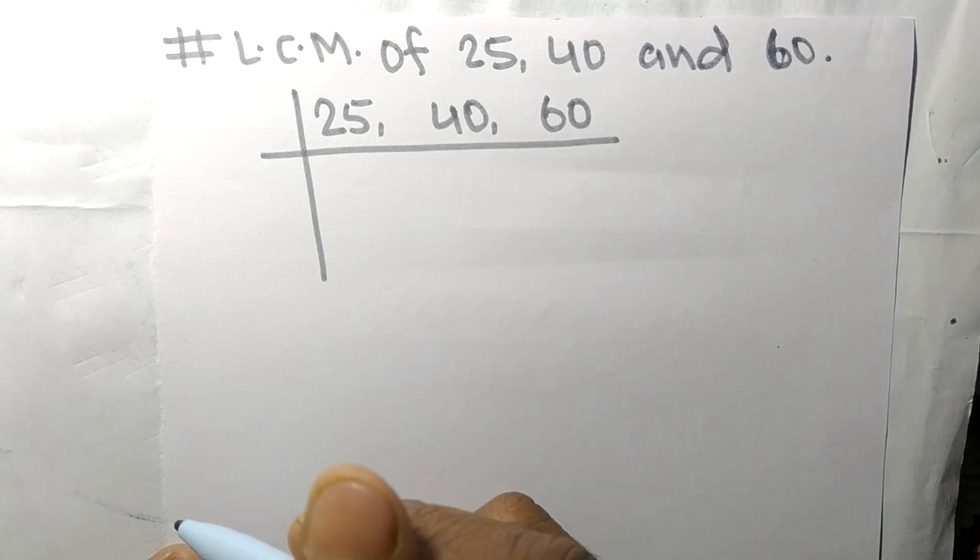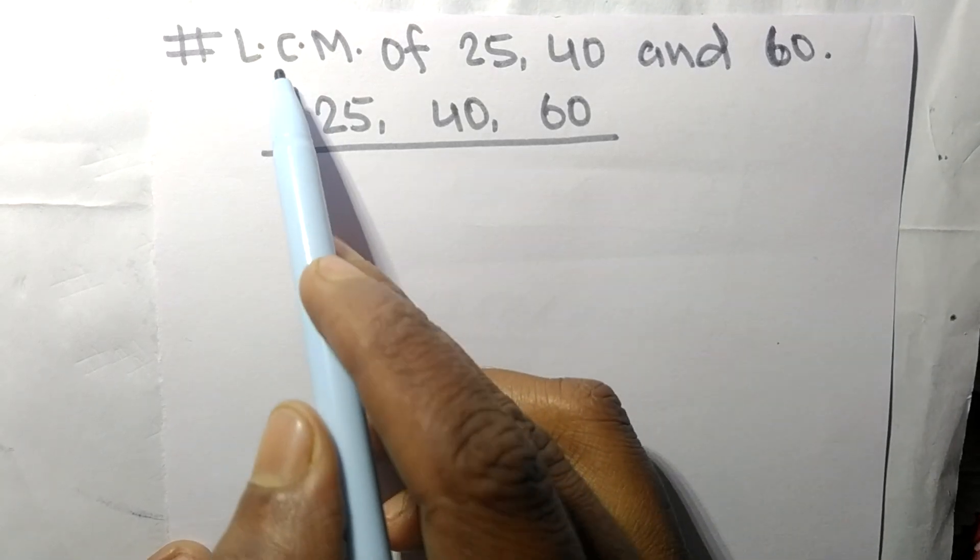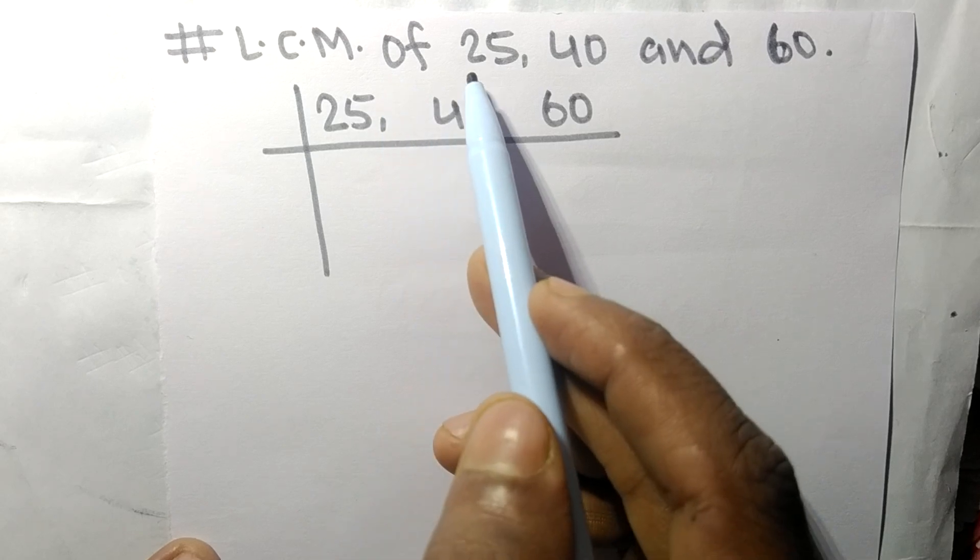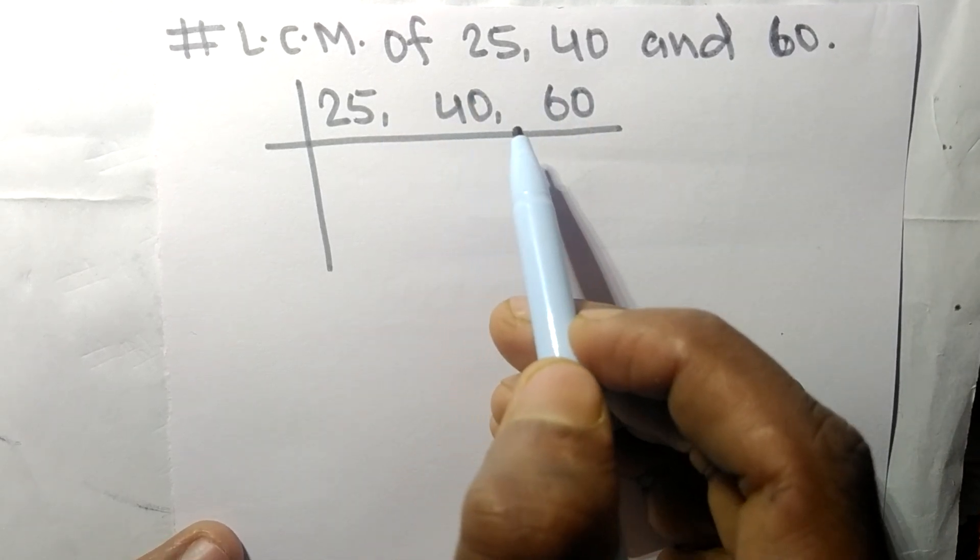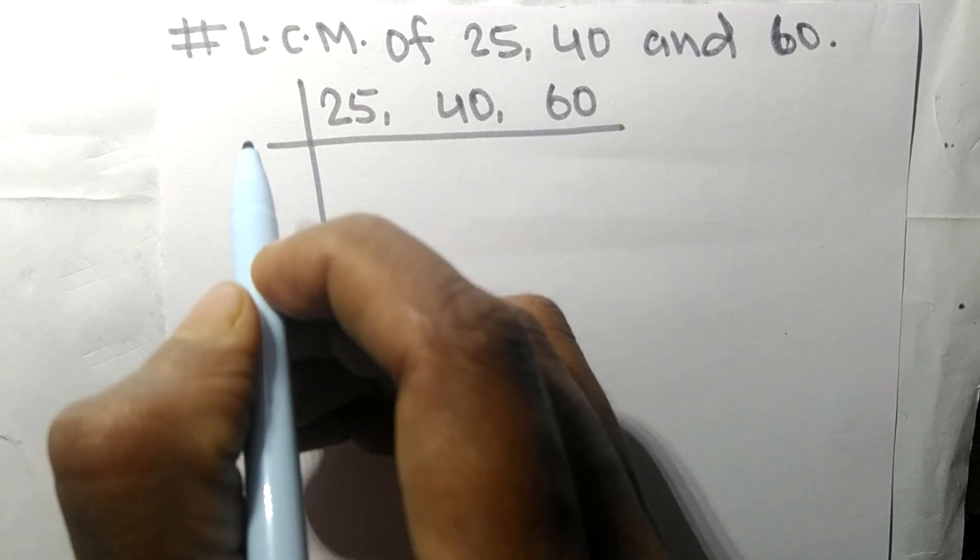So today in this video we shall find LCM of 25, 40 and 60. So 40 and 60 are divisible by 2.